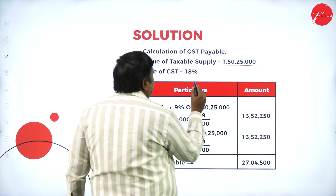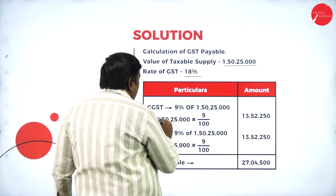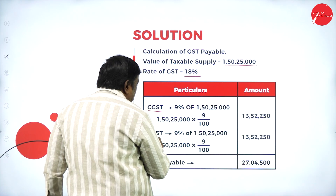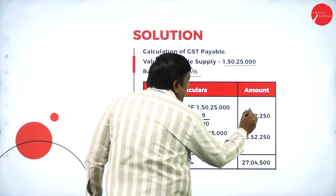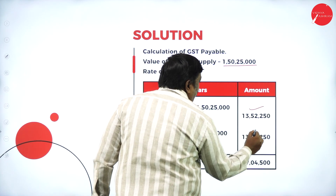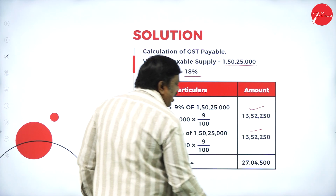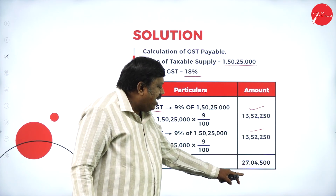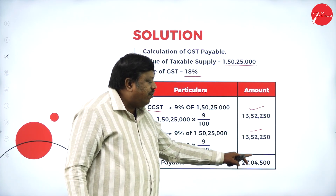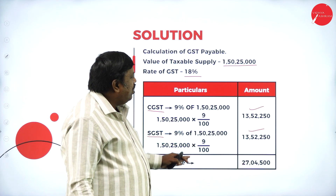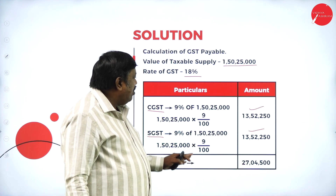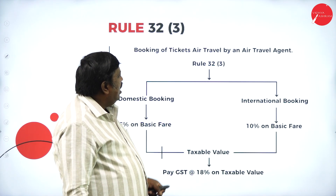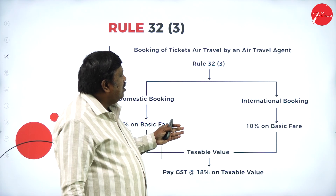Total taxable value of supply across all cases = ₹2 lakhs + ₹1 lakh + ₹12,25,000 + ₹61 lakhs + ₹61 lakhs + ₹12,50,000 = ₹1 crore 50 lakh 25 thousand. On this, 18 percent GST is payable — 9 percent CGST and 9 percent SGST = ₹13,52,250 each, making the total GST payable ₹27,04,500.